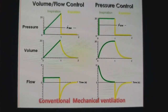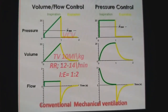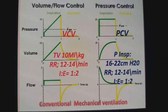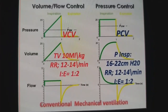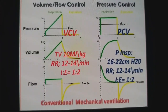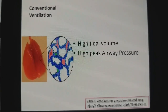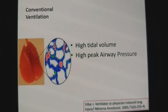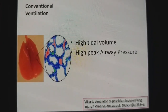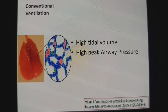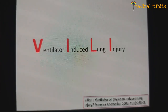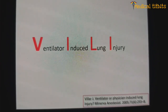Now coming to the different types of ventilation: volume control ventilation or pressure control ventilation with tidal volume 10 mL per kg with 12 to 14 breaths per minute, and pressure control 16 to 20 cm of H2O with 12 to 14 breaths per minute. This type of conventional ventilation leads to higher tidal volume delivery in pressure control and generation of higher peak airway pressure in volume control ventilation. A couple of minutes of this type of conventional ventilation can lead to ventilator-induced lung injury — we can call it VILI.